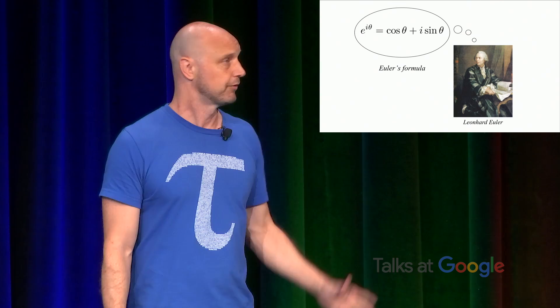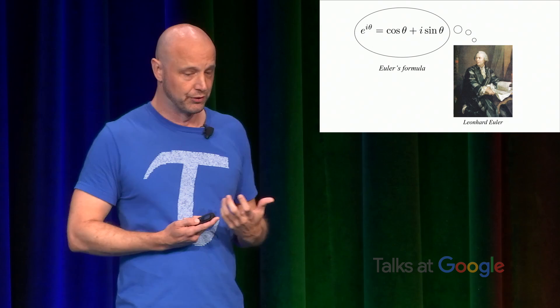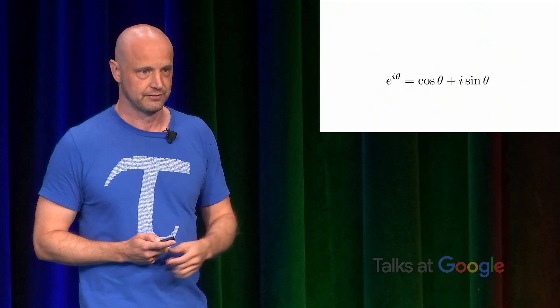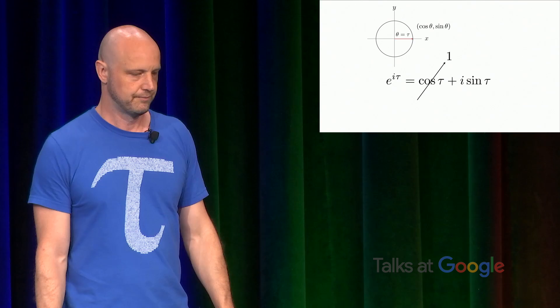And in order to get what I believe deserves the name and what captures the true spirit of Euler's identity, we're going to evaluate this formula when theta is equal to the circle constant, which is tau. So E to the i tau equals cosine tau plus i sine tau. If we look at our unit circle, when theta equals tau all the way around, cosine theta is one, or cosine tau here is one, and sine tau is zero. So that gives us this equation. E to the i tau equals one.